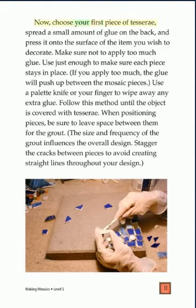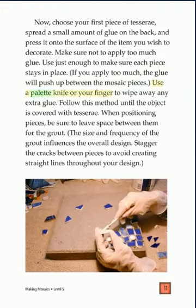Now, choose your first piece of tessari, spread a small amount of glue on the back, and press it onto the surface of the item you wish to decorate. Make sure not to apply too much glue — use just enough to make sure each piece stays in place. If you apply too much, the glue will push up between the mosaic pieces. Use a palette knife or your finger to wipe away any extra glue. Follow this method until the object is covered with tessari. When positioning pieces, be sure to leave space between them for the grout. The size and frequency of the grout influences the overall design. Stagger the cracks between pieces to avoid creating straight lines throughout your design.